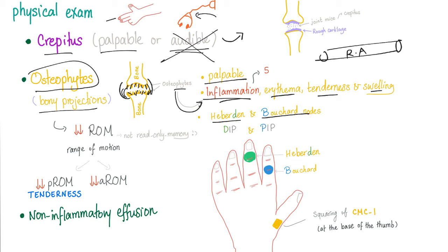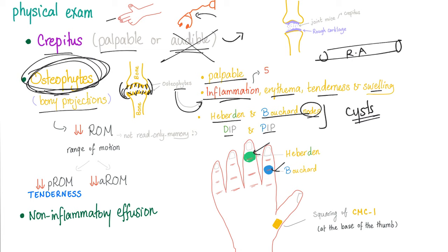Next, we have Heberden and Bouchard nodes at the DIP and PIP joints respectively. These nodes are osteophytes — some authors argue they are cysts, but they are probably osteophytes. Because they are bony projections, Heberden and Bouchard nodes are hard. By contrast, rheumatoid nodules are soft because they are not osteophytes. If you have bony projections all over the place, the range of motion is going to decrease.